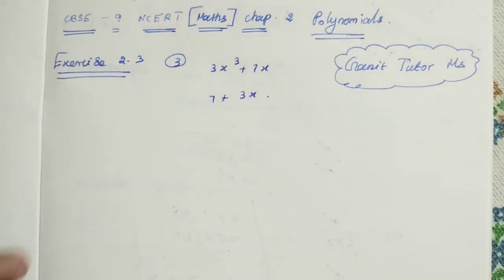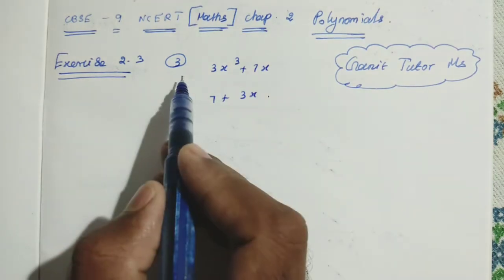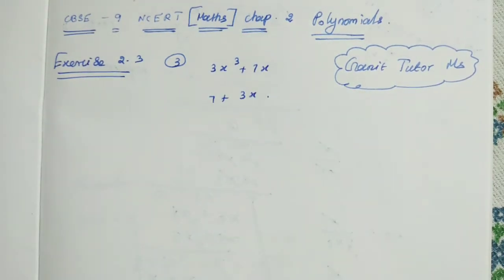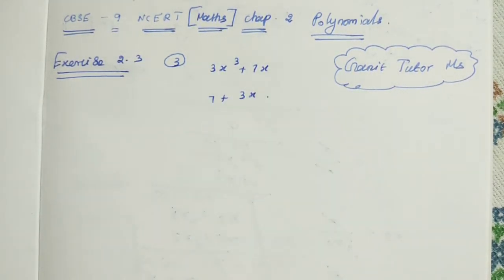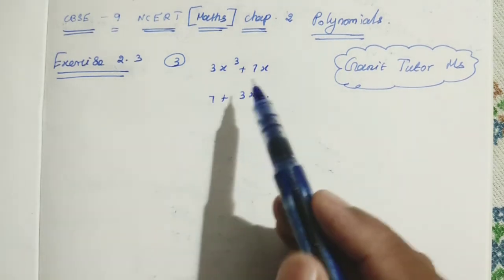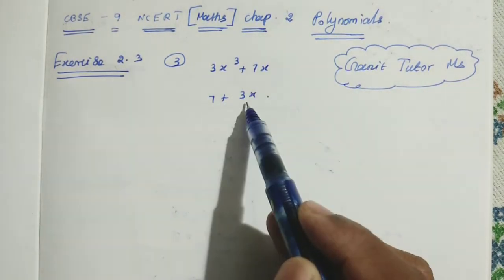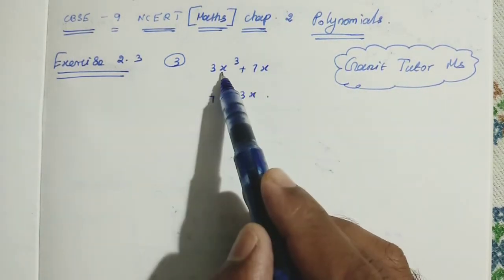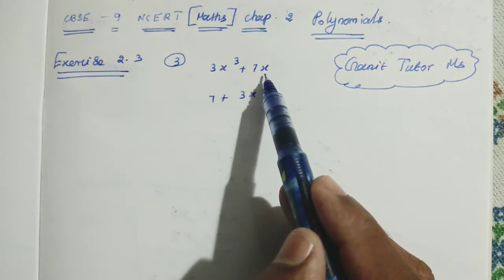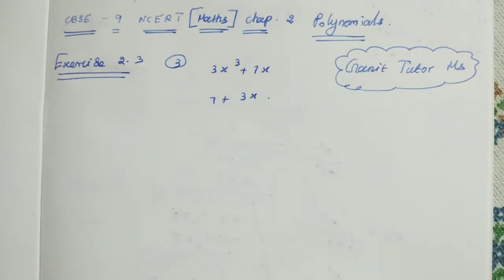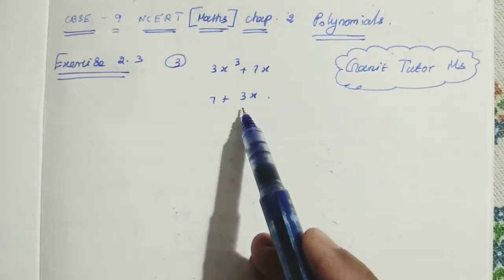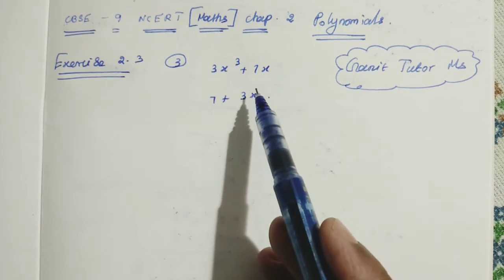In this video, I am going to solve exercise 6, number 2.3, third problem. It is from ninth standard mathematics. The problem asks: check whether 7 plus 3x is a factor of 3x cubed plus 7x. We should check whether this one is a factor of the given polynomial or not.